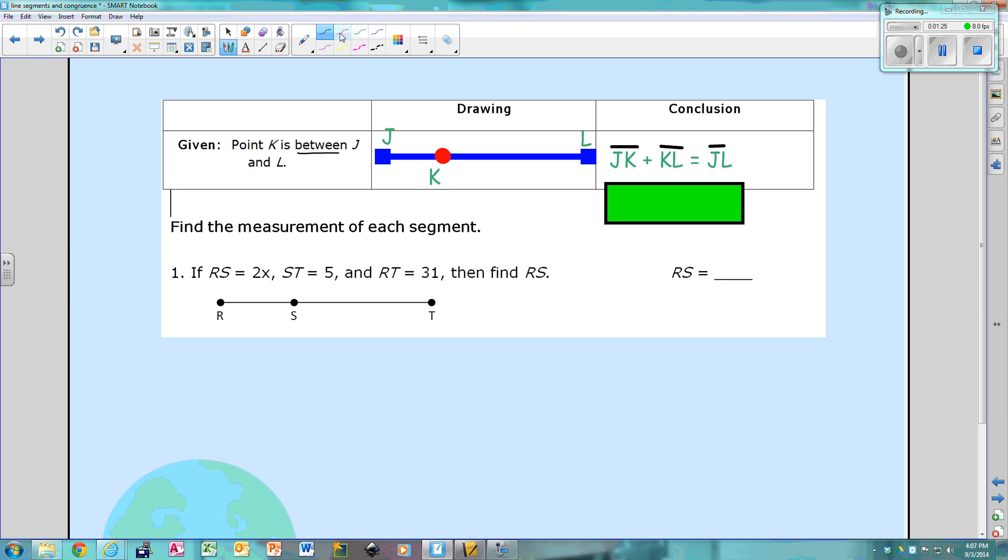So let's look at the first example. It says, if RS is 2X, and ST is 5, and RT is 31, find RS. Well, in order to find RS, which would be this piece here, I need to find X. So the first thing I would say is, RS plus ST equals RT, the whole thing. So then I would label my picture, RS is 2X, so this piece is 2X, ST is 5, and they're not always drawn to scale, which means they're not always going to be drawn to look like they're measurements.